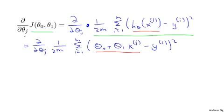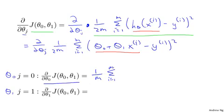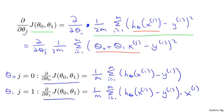It turns out we need to figure out this partial derivative for two cases: for j equals 0 and for j equals 1. So we want to figure out what this partial derivative is for both the theta_0 case and the theta_1 case. The first term simplifies to 1 over m times the sum over the training set of (h(x_i) − y_i). And for the partial derivative with respect to theta_1, it turns out we get that term times x_i.